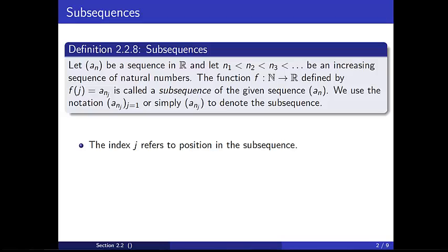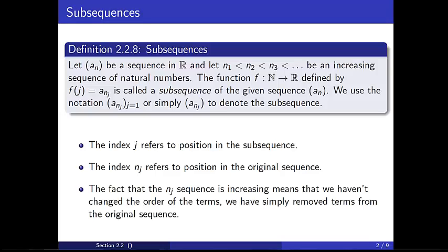The index j refers to position in the subsequence. The index n_j refers to position in the original sequence. The fact that the n_j sequence is increasing means that we haven't changed the order that the terms appear in the subsequence — we have simply removed terms from the original sequence.